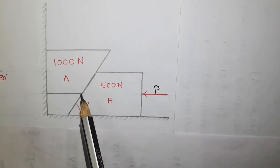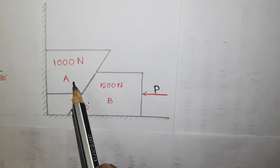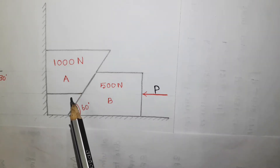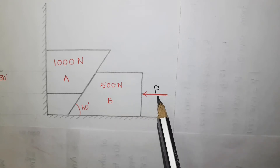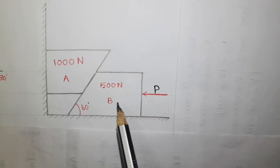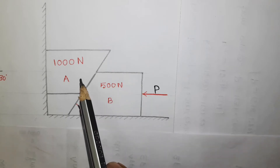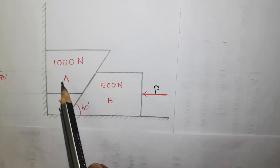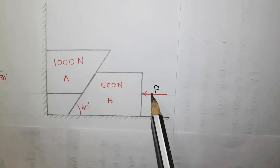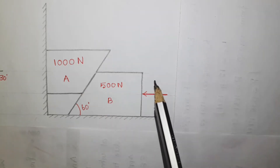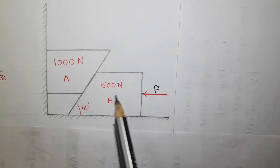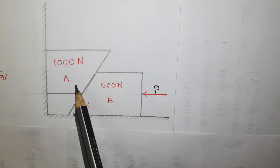If there is no block B, this mass will try to come down. I am supporting block A by block B. Moreover, I am applying a force P also. So the entire objective is to bring block A into equilibrium — that means it should be at rest with the help of this force P. We have to find the minimum force needed to keep this block in equilibrium.